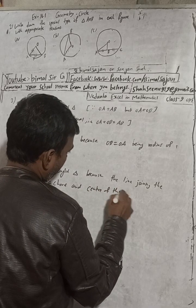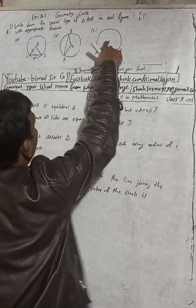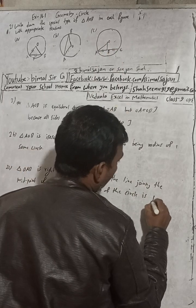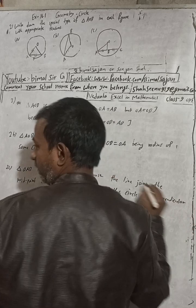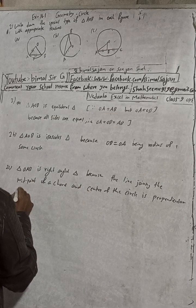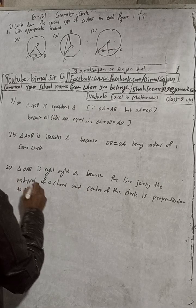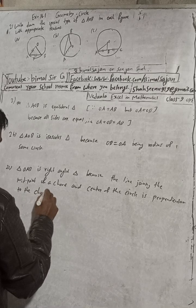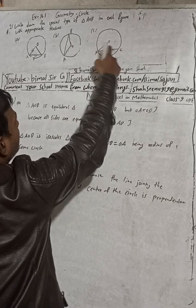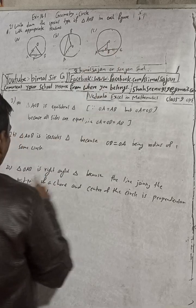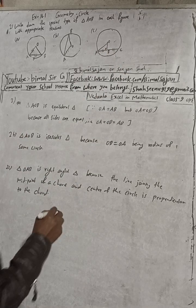The center of the circle is perpendicular to the chord, making a 90-degree angle. Since it is perpendicular, this is 90 degrees, so triangle AOB is a right angle triangle.